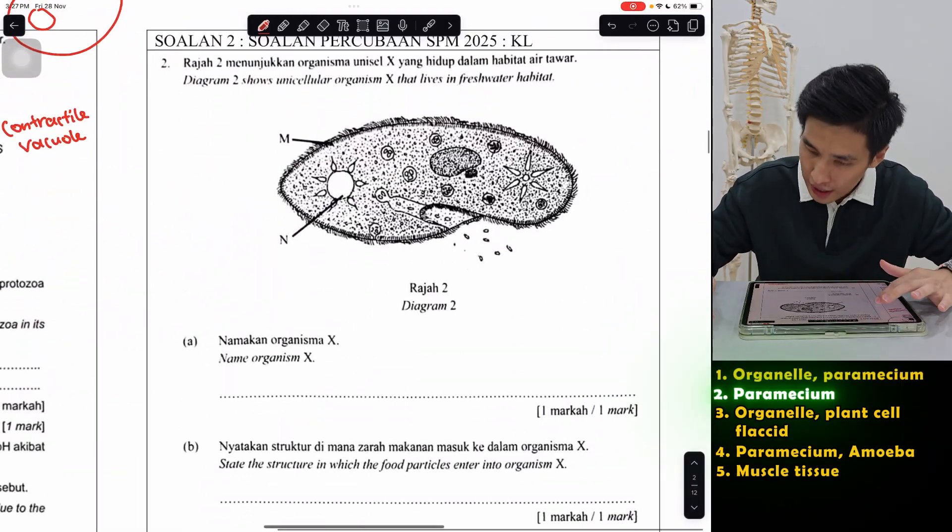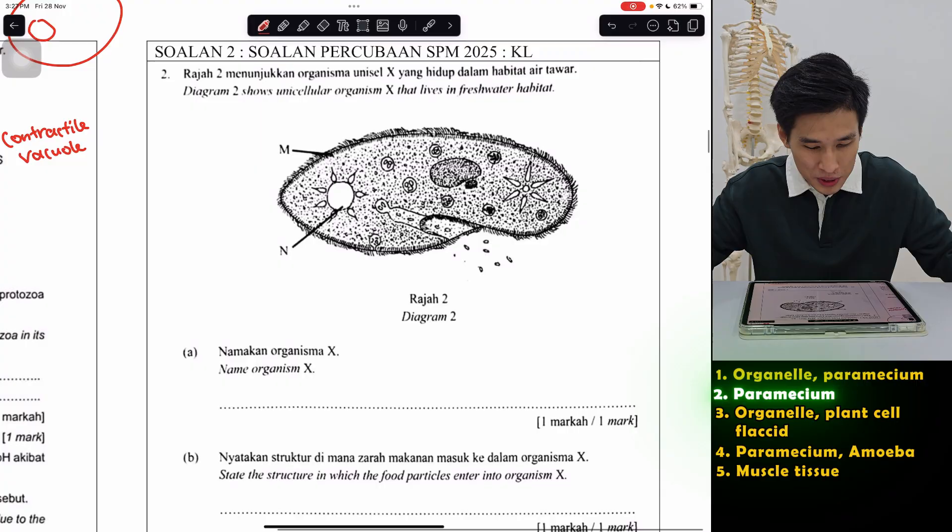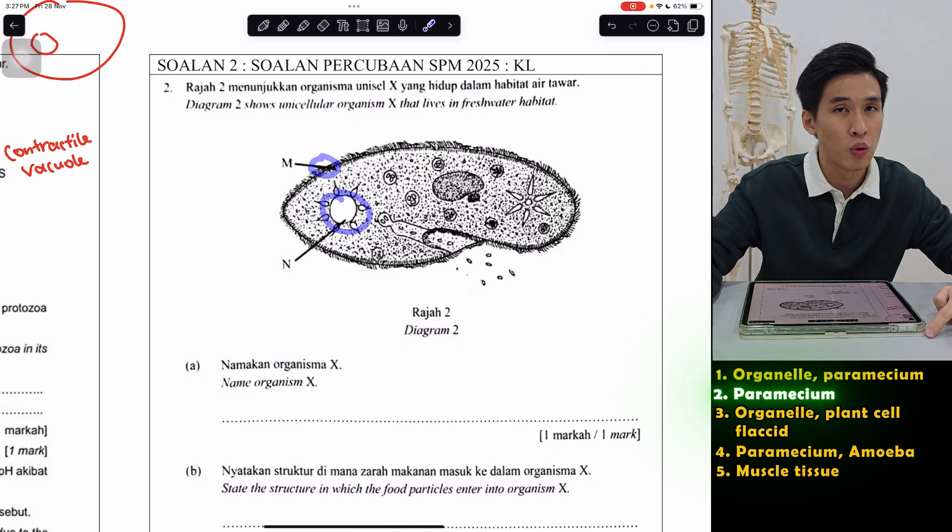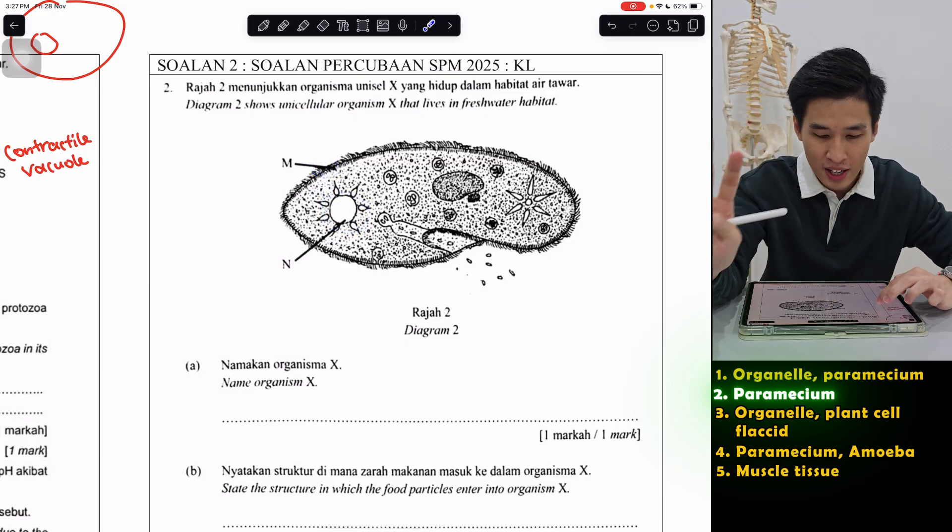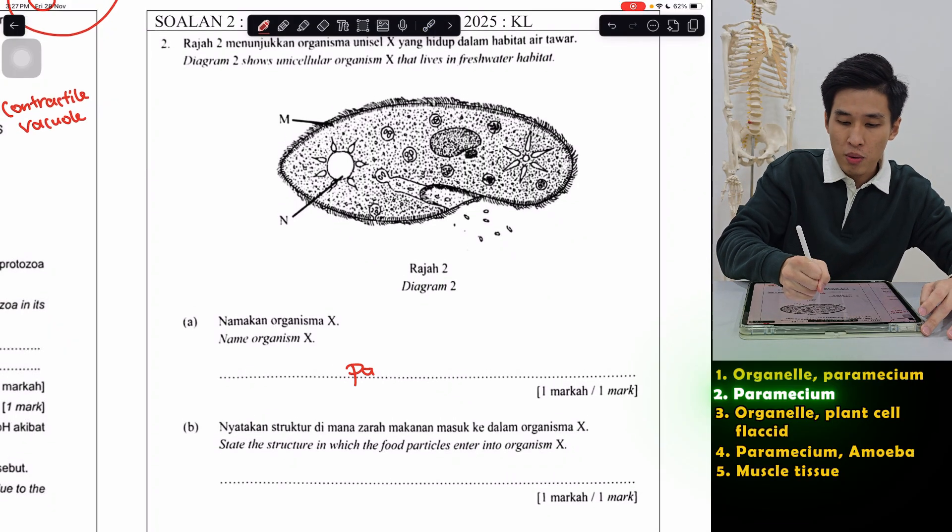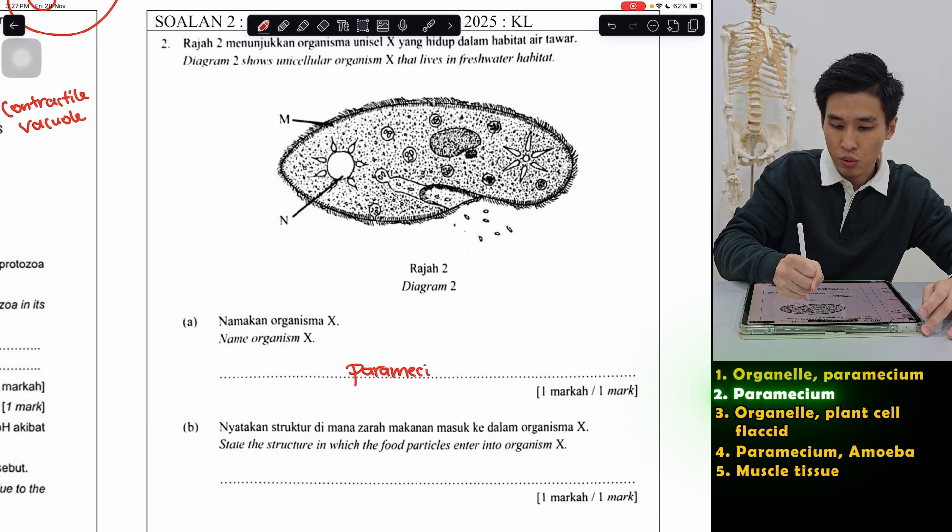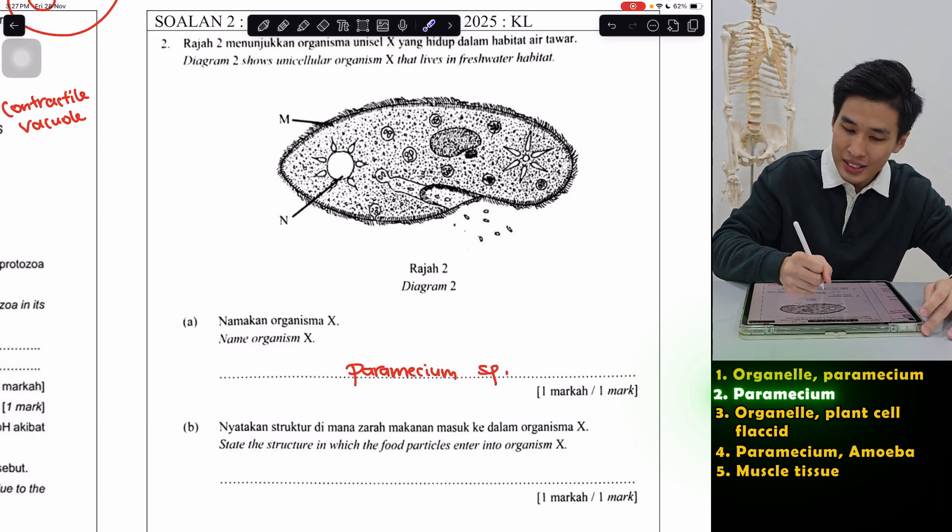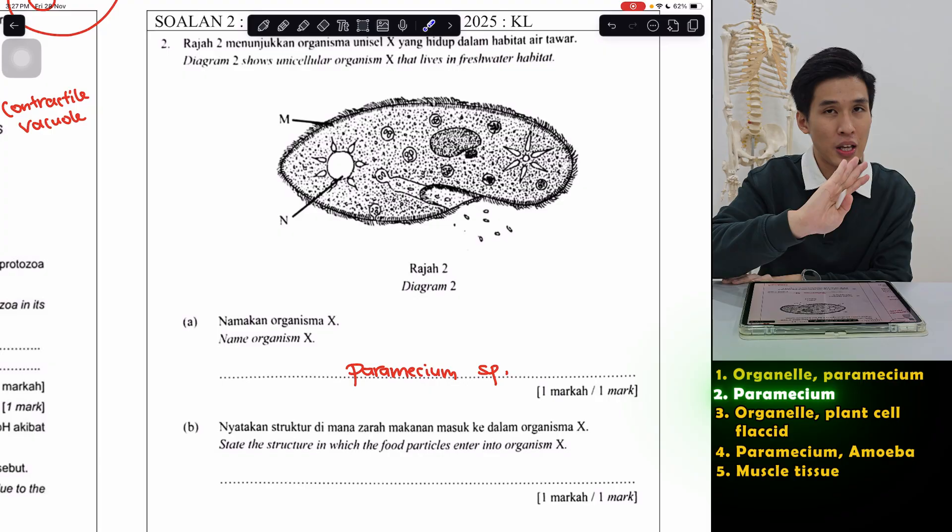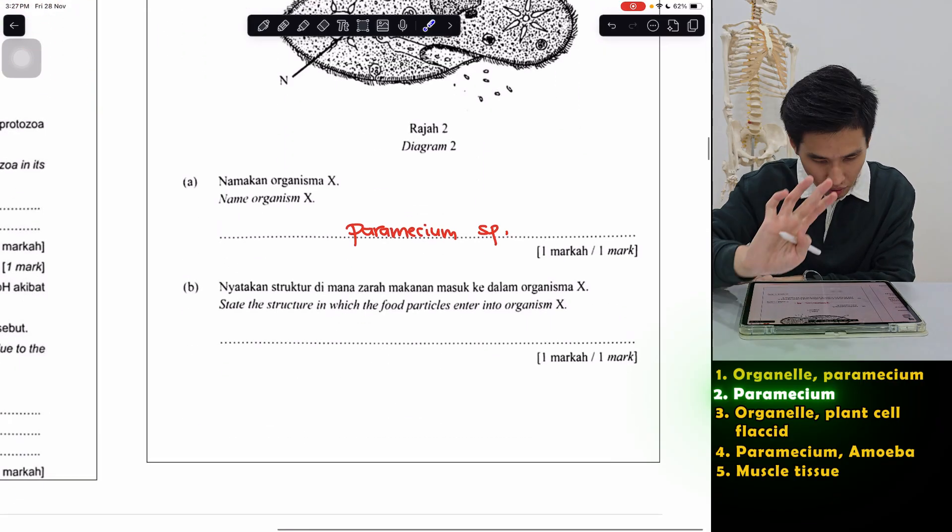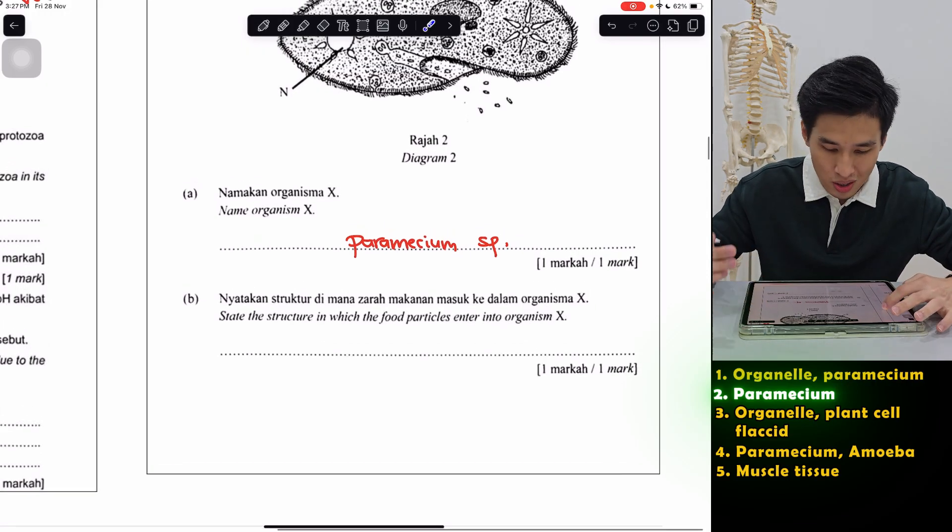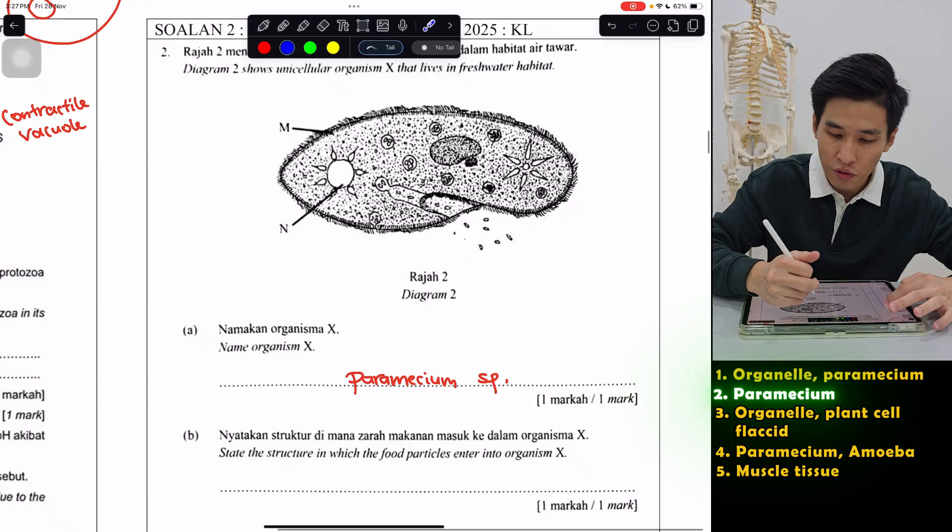All right, easy. Next. KL paper. Again about paramecium. Very similar thing they're asking. They appointed the two same things, cilia and the contractile vacuole. These two things you should know, very commonly asked. Name organism X. What else? Paramecium. So paramecium and amoeba, please remember to write the sp dot. You don't need to underline this. The underline thing is only for chapter 8. Structure in which the food particles enter into organism X. Where does the food enter from? For paramecium and amoeba, they have a mouth. So this mouth is called the oral groove.